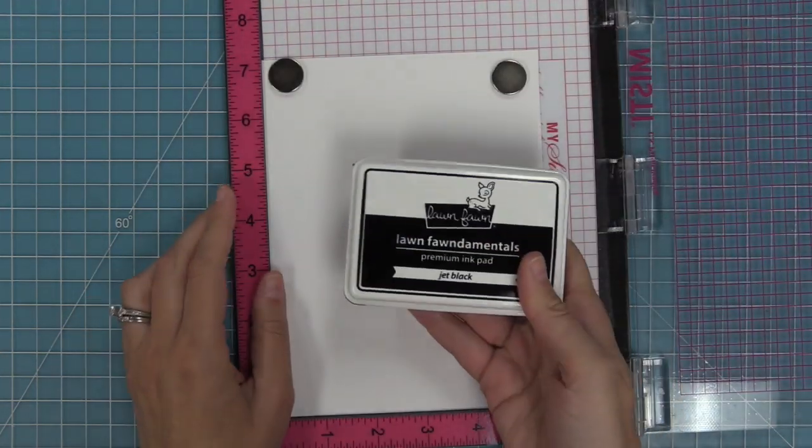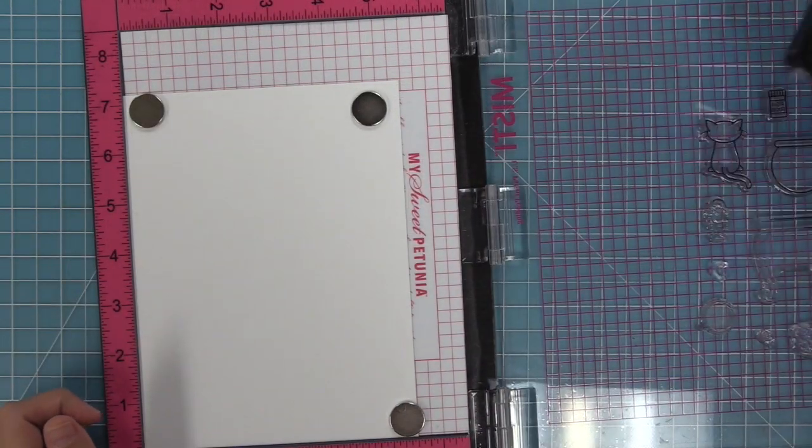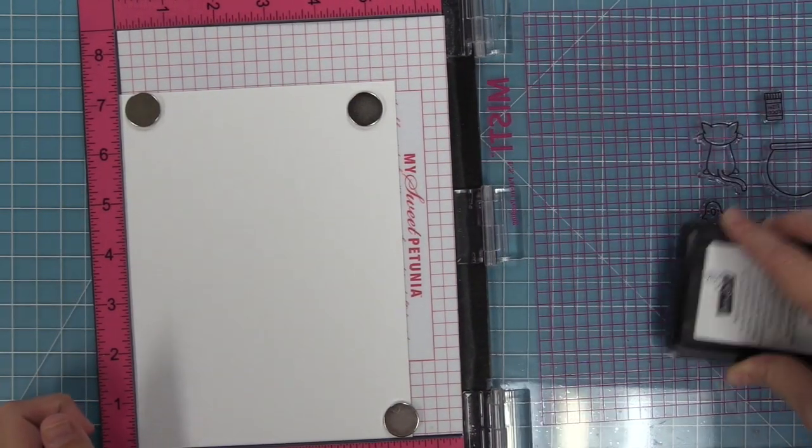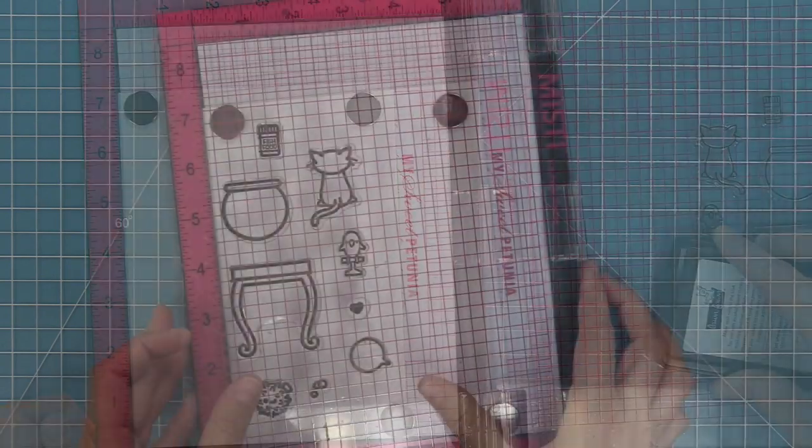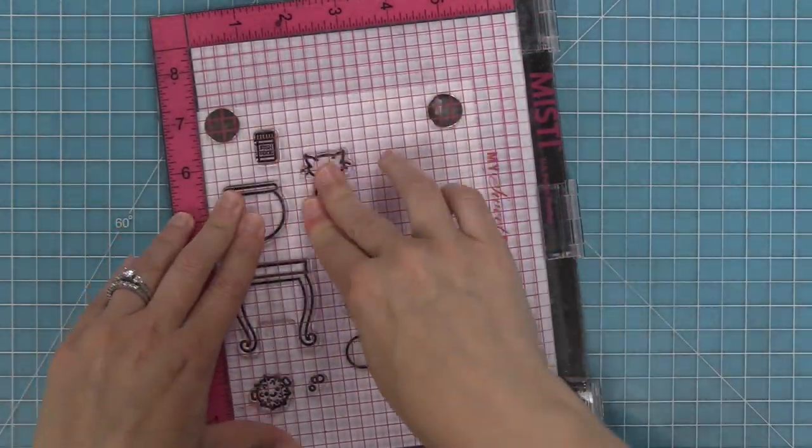Now that we've laid all the stamps onto our white cardstock, we can pick it up with the door of the MISTI and we're going to be using some jet black Copic-friendly ink to stamp out all of these images.